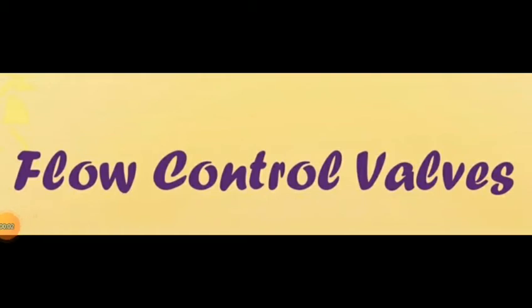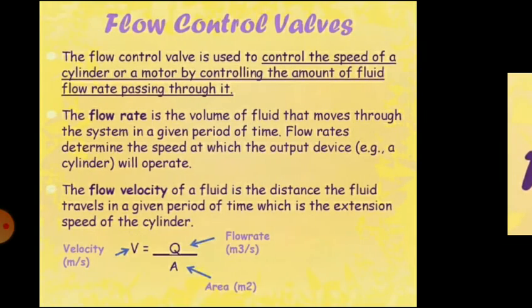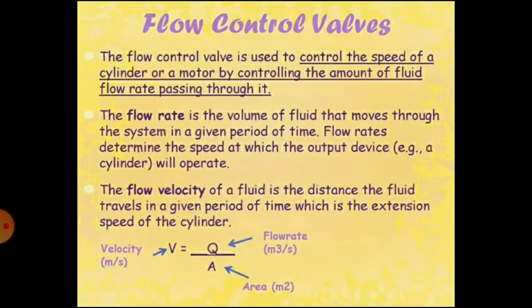Good morning. Today we will discuss regarding flow control valves used in hydraulic systems. The flow control valve is used to control the speed of a cylinder or a motor by controlling the amount of fluid flow rate passing through it. Flow control valves are used to regulate the flow of fluid in a hydraulic system. The flow rate is the volume of fluid that moves through the system in a given period of time, and flow rates determine the speed at which the output device, for example a cylinder, will operate.